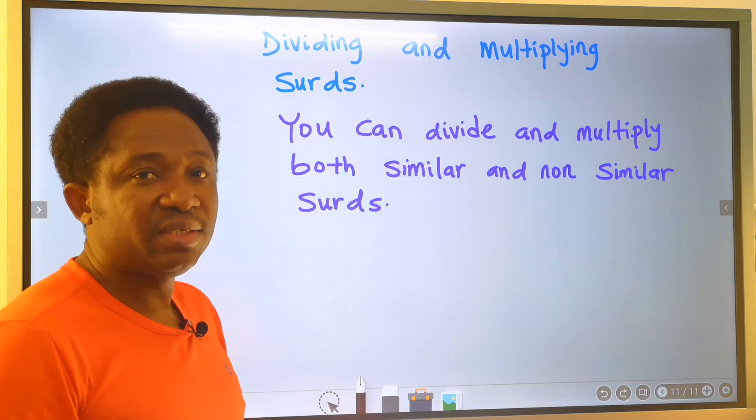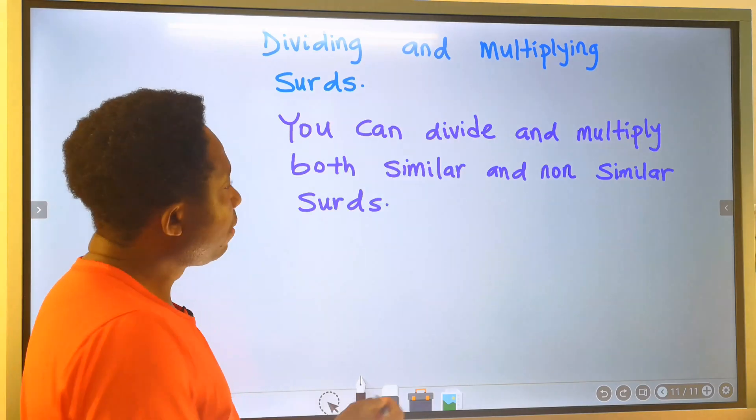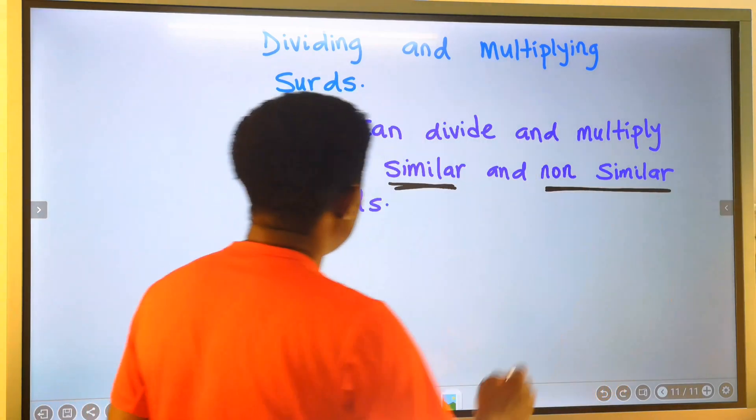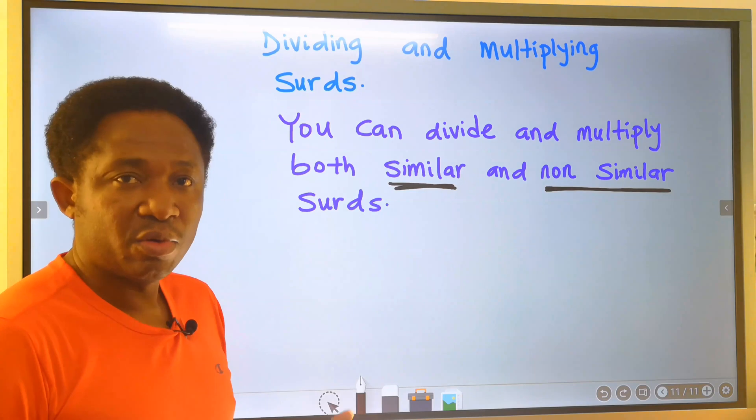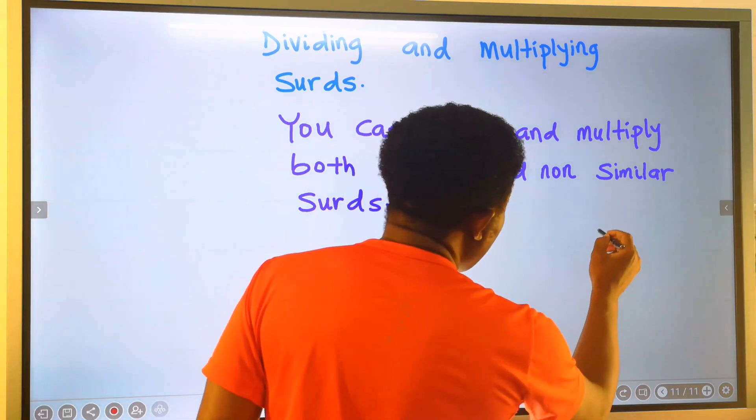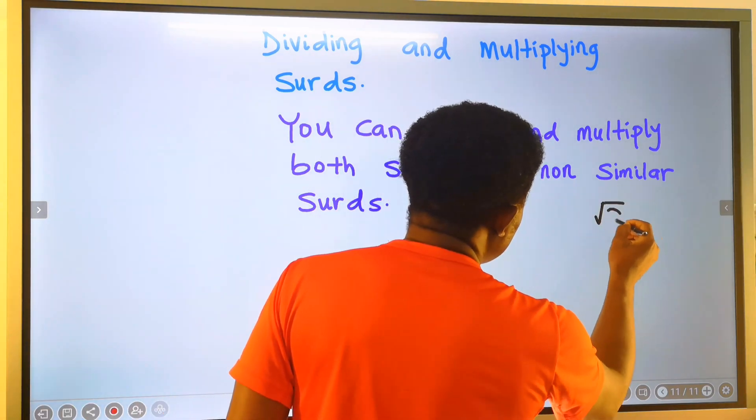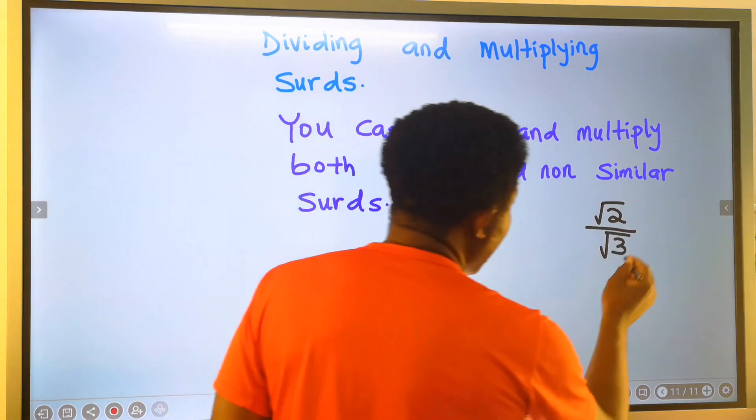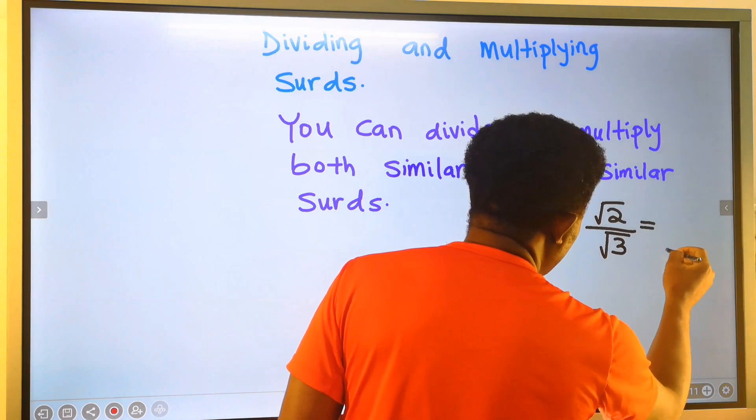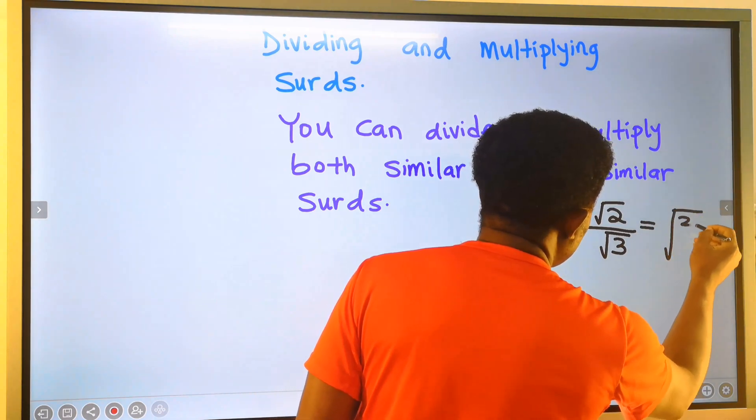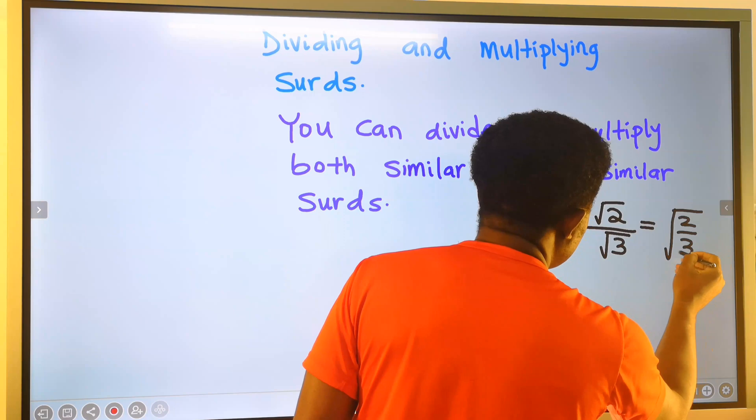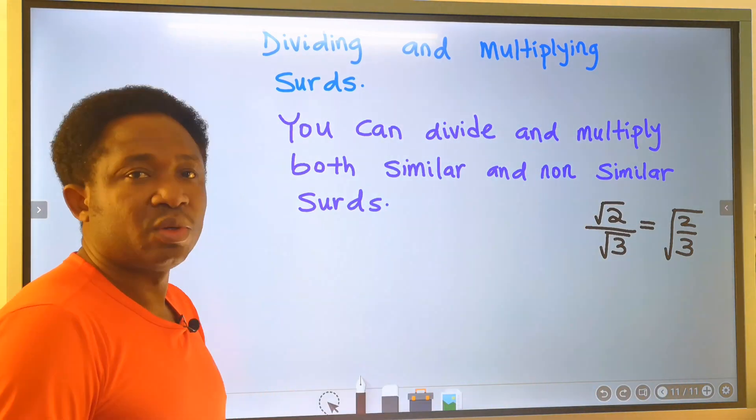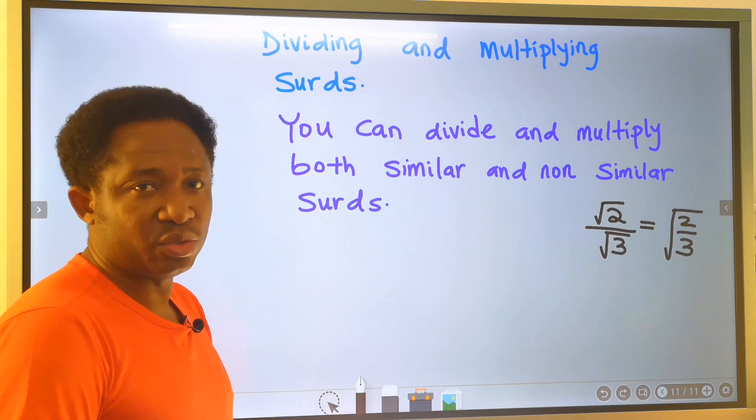You can divide and multiply both similar and non-similar surds. For example, you can have the square root of 2 divide the square root of 3. And we can write this as the square root of 2 divide the square root of 3. This is allowed when dealing with surds.